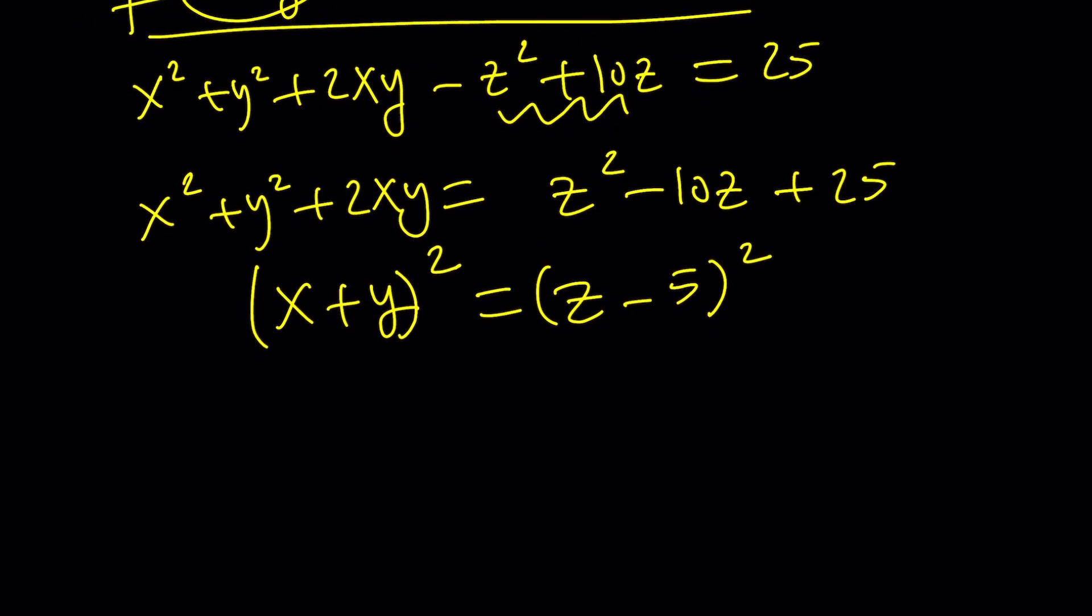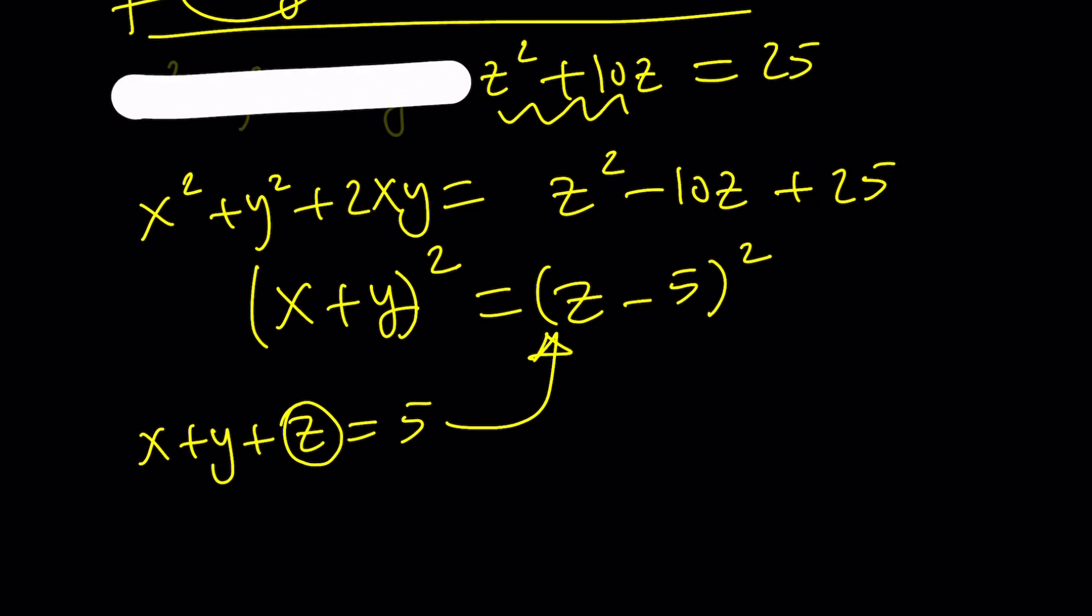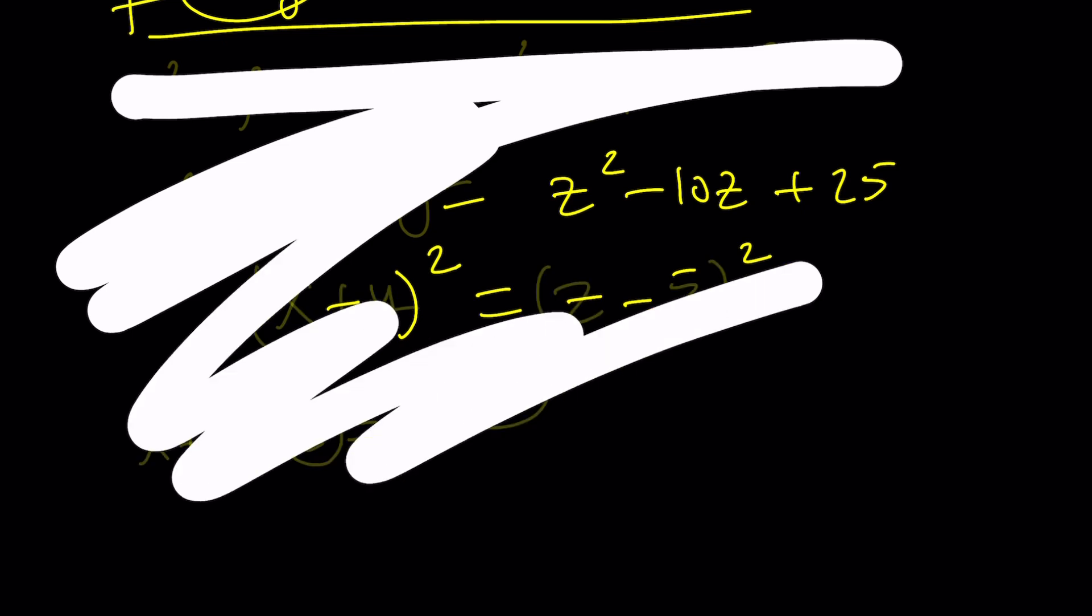You know why? Because this is x plus y squared, and this is z minus 5 squared. And guess what? You could get that. I mean, x plus y plus z is 5. So if you isolated x plus y from here, subtract z from both sides and square both sides, it would give you this. So this is probably not very helpful, is it? We're going around in circles. So let's go ahead and get rid of this. I don't think this is going to be helpful at all.